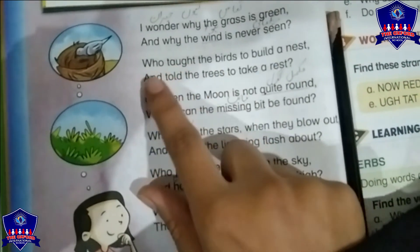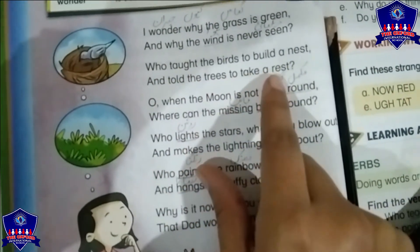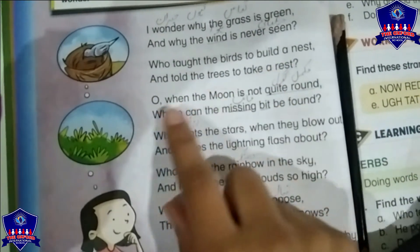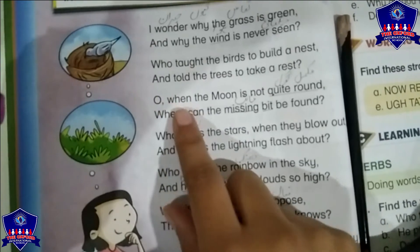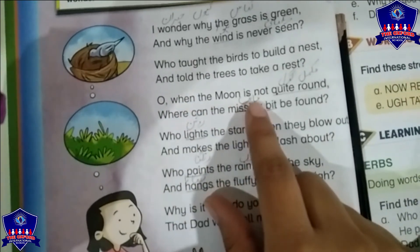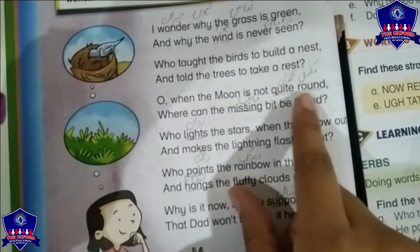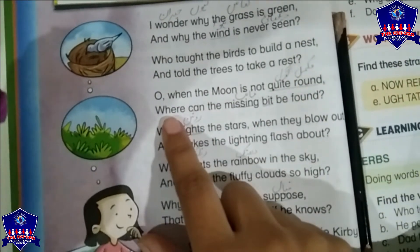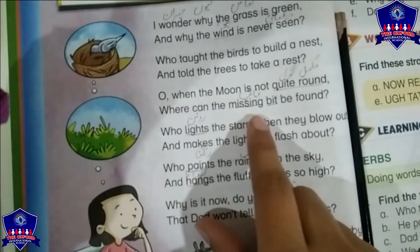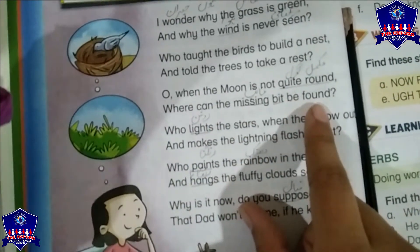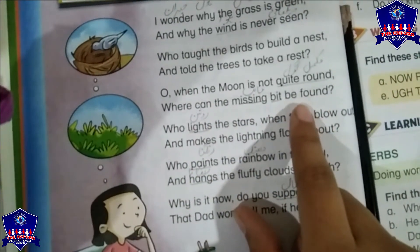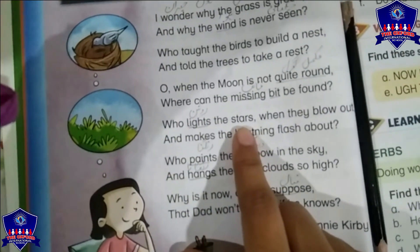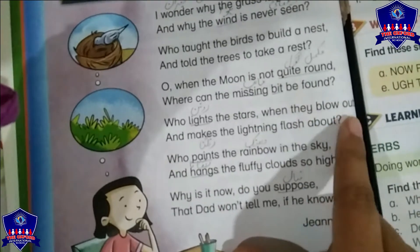'Who taught the birds to build a nest, and told the trees to take a rest?' کس نے پرندوں کو سکھایا کہ وہ گھونسلہ بنائیں — who taught the birds to build a nest. اور کس نے درختوں کو بتایا کہ وہ آرام کریں — and told the trees to take a rest. 'Or when the moon is not quite round, where can the missing bit be found?' اس کا غائب حصہ کہاں پایا جاتا ہے۔